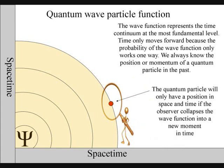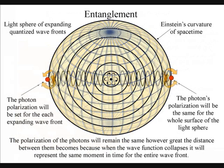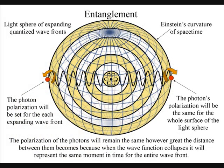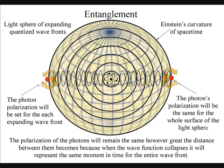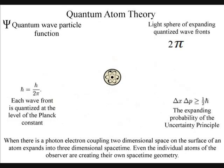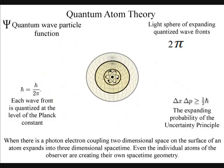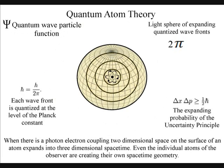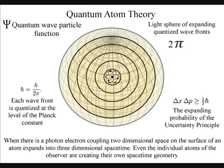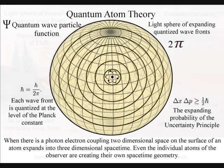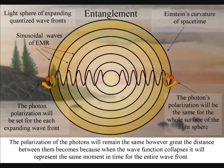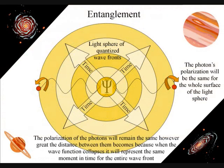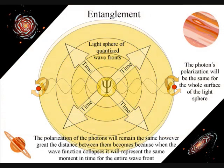We have the entanglement because the polarization will be set at the creation of each expanding wavefront. The wavefront will expand in the form of a light sphere, and the polarization will remain the same for the entire surface of the light sphere, no matter how large it becomes. Because light is electromagnetic radiation in the visible spectrum, this process is visible to us.